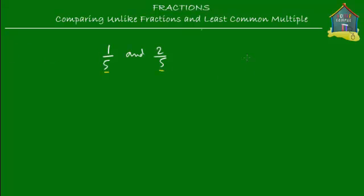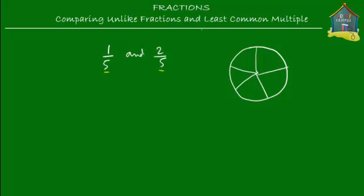If you are given a pizza and you are asked to mark these two fractions on it, then you know you have to cut the pizza into five slices because the denominator says five. So you cut the pizza into five slices and you can mark one-fifth and two-fifth — two-fifth being two slices of the five slices.